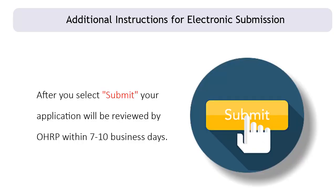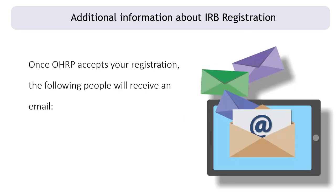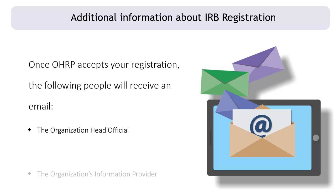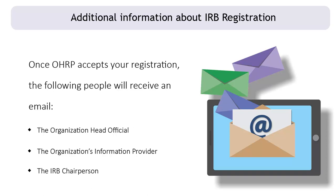After you select Submit, your application will be reviewed by OHRP within 7-10 business days. Once OHRP accepts your registration, the following people will receive an email: the organization's head official, the organization's information provider, and the IRB chairperson. This is dependent upon correct email addresses being provided for each of these individuals. This concludes the steps for registering a new IRB.